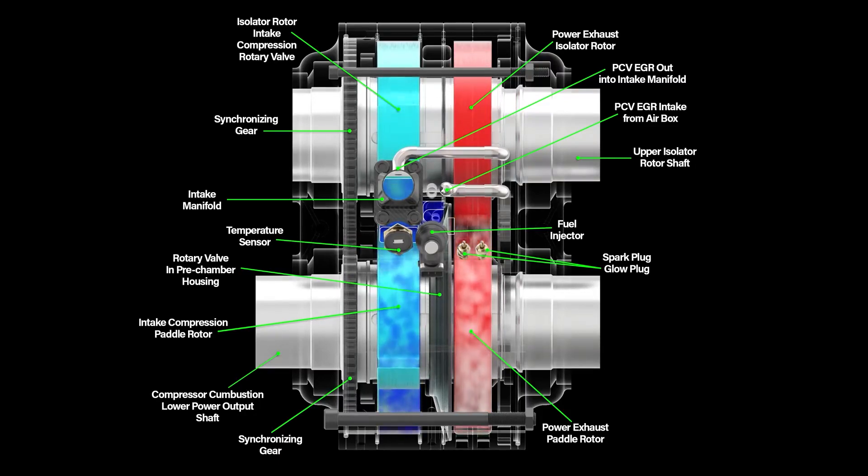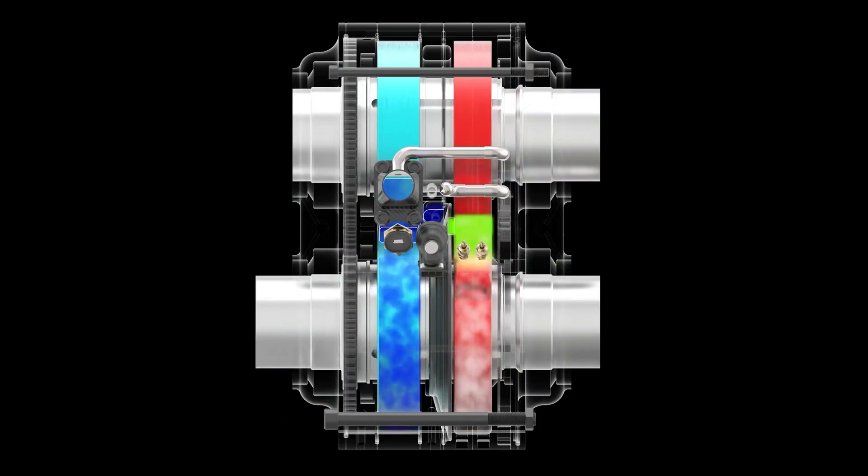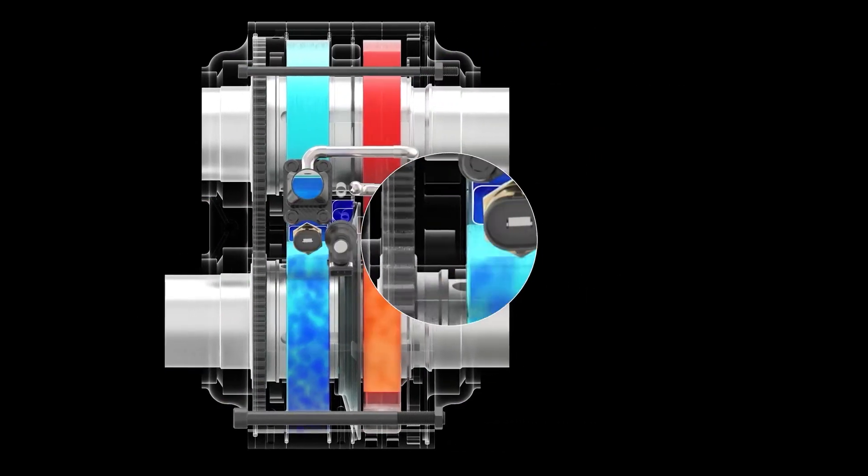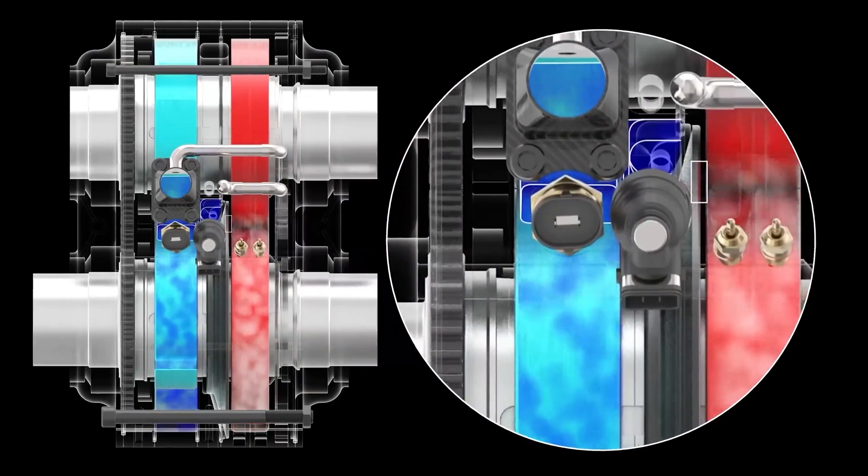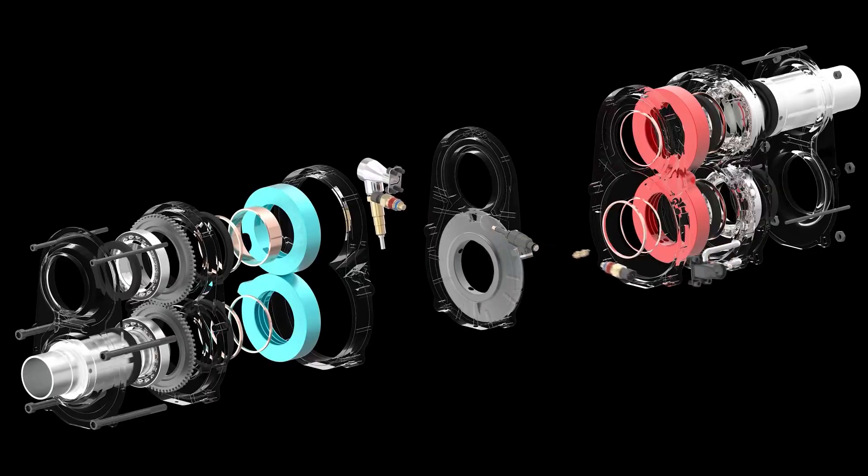The intake air is compressed and travels through a rotary valve to the pre-chamber between the rotors where fuel is injected and when it enters the power side of the rotor it ignites driving the rotor and then it leaves through the exhaust port.